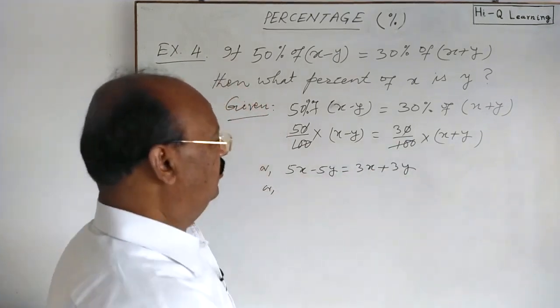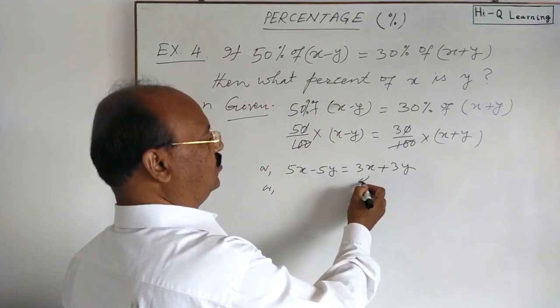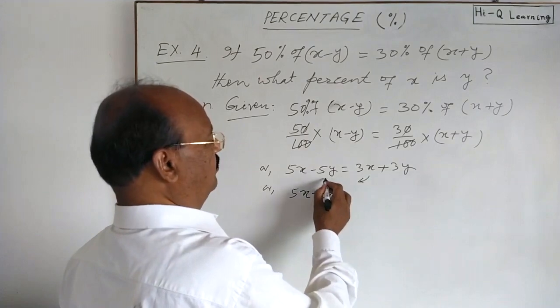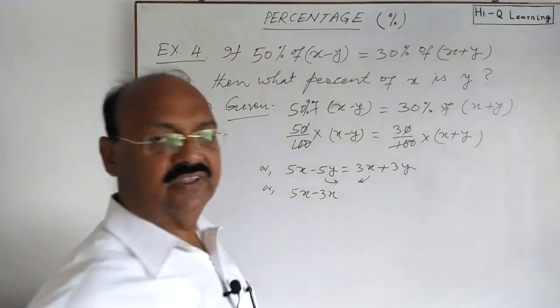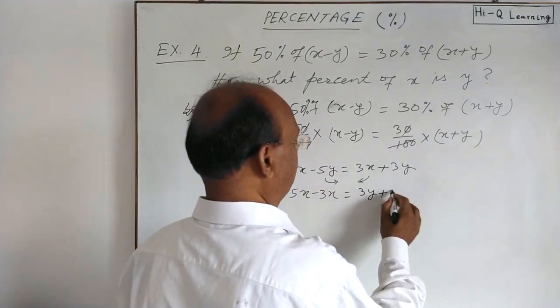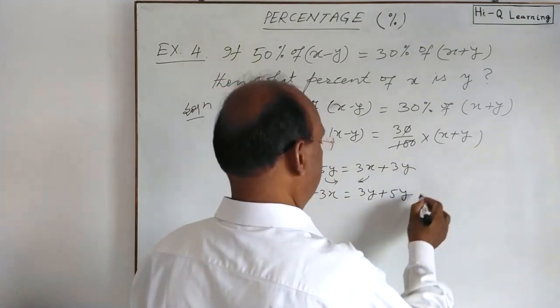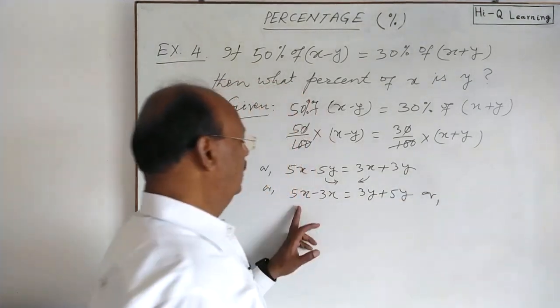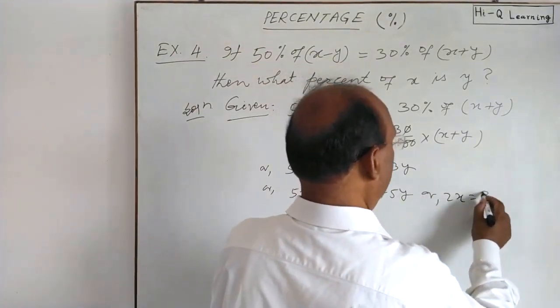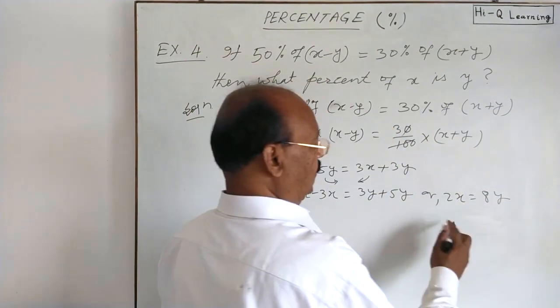Or, we will transpose this 3x to left hand side. So, this is equal to 3y plus 5y. Or, 5x minus 3x is 2x is equal to 8y.